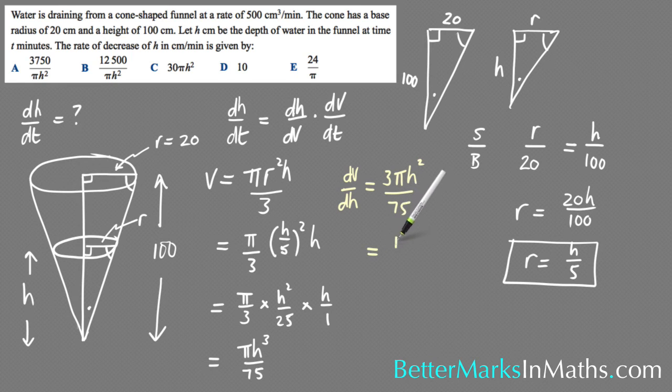So therefore, dh/dV is equal to 25/(πh²), just turning that upside down.